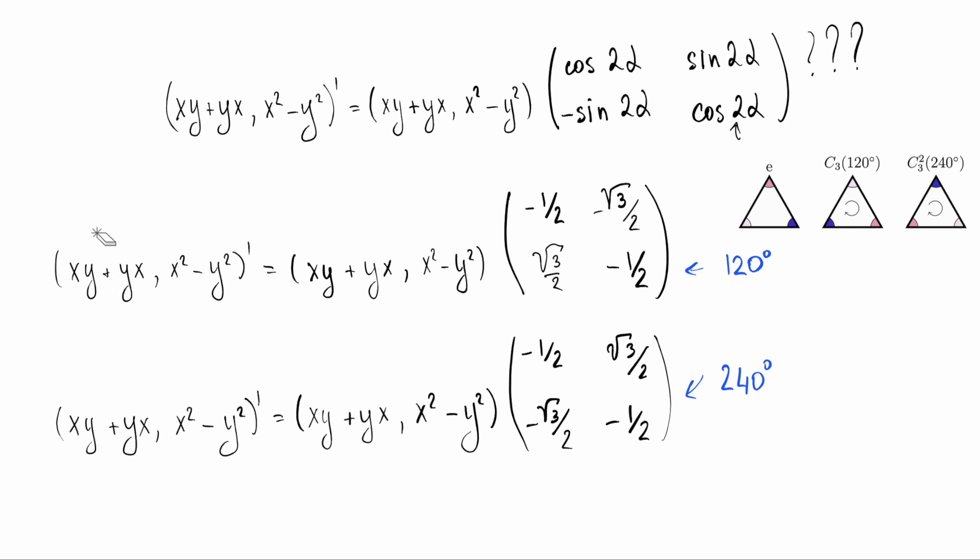Here we notice something very interesting. If, instead of those specific functions, we substitute just the functions x and y, the expressions, the matrices still remain valid. x and y under a 120-degree rotation transform in exactly the same way as 2xy and x squared minus y squared. This coincidence is not accidental.